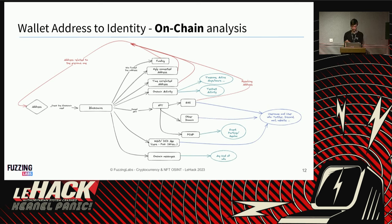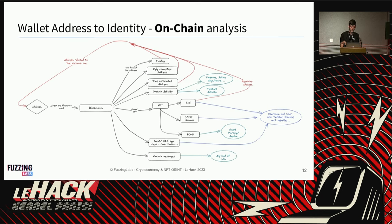To find information directly on an address, look at its on-chain activity — which hours of the day and which days of the week it's active. This can reveal a lot. Also check testnet activity; testnets are blockchain networks for testing where currency has no value, but people deploy smart contracts there. One of the most interesting sources is NFTs.